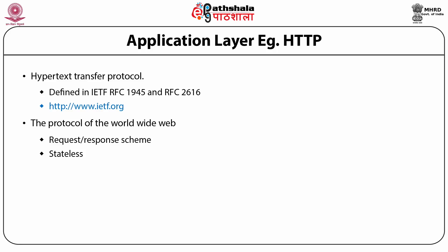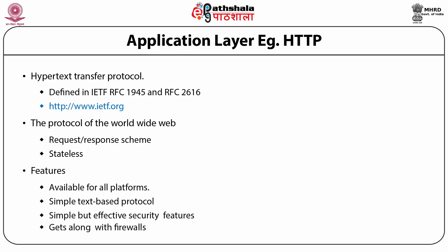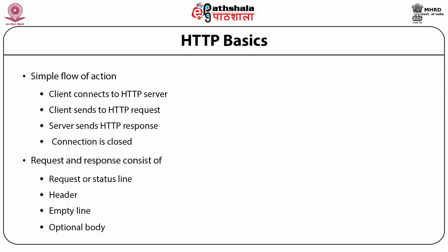HTTP works on two principles: request and response. I type a request, and if available, the server displays the content on the browser. This protocol can be used only in a browser, is available on all platforms, and is a text-based simple protocol with adequate security. For higher security, you need HTTPS — the secured model of HTTP. The client connects to an HTTP server (web server), requests content, and the server sends an HTTP response. Once the flow is over, the connection is closed. The request and response consists of a request status line, header, empty line, and optional body.